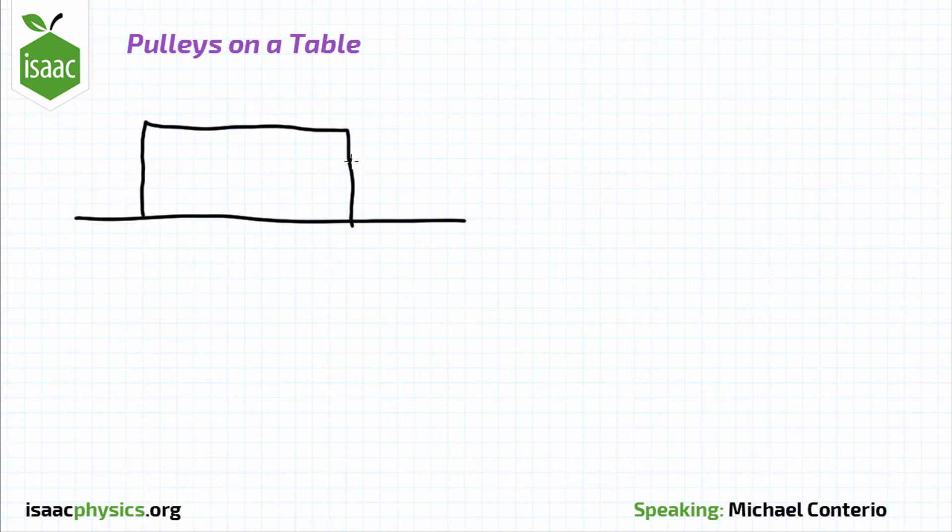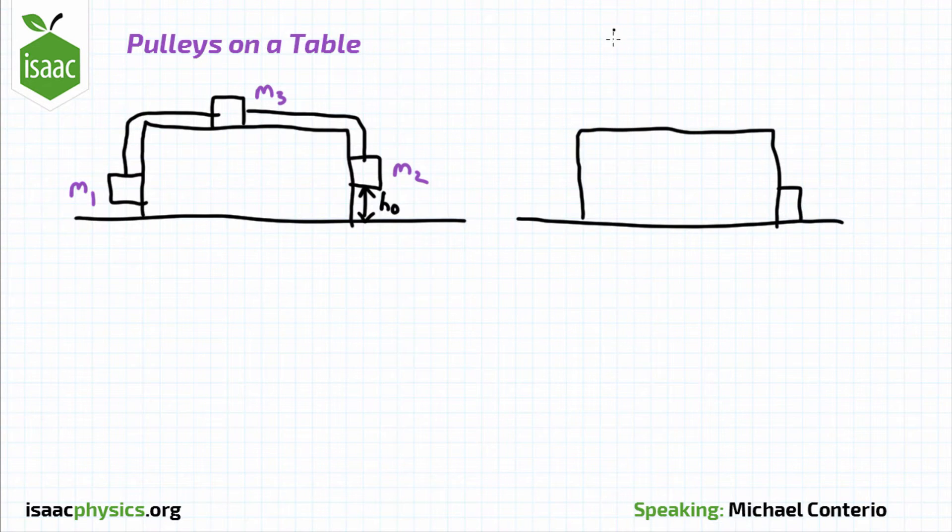The system starts with all three masses stationary, but with mass m2 a height h0 above the ground. By the time mass m2 hits the ground, all of the masses are moving with a speed u.